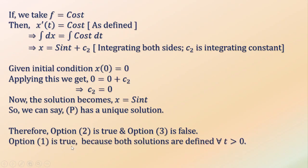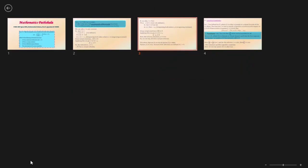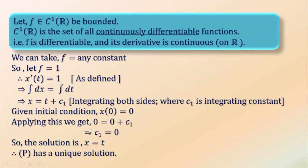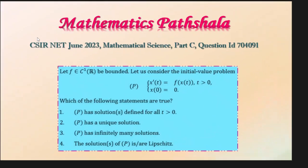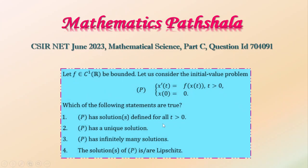Now option 1 is true because both solutions in our two examples are defined for all t greater than 0. So P has solutions defined for all t greater than 0. Thus options 1 and 2 are both correct. Now let's see option 4.